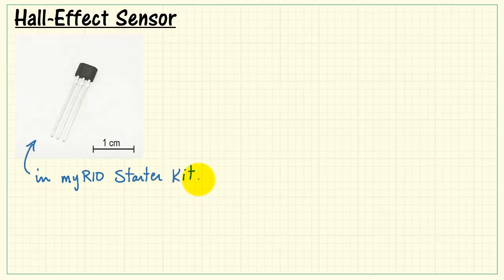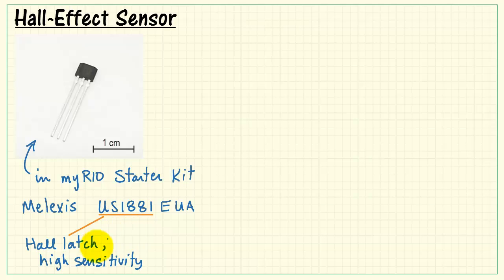Here we have the Hall Effect sensor that's included in the MyRIO Starter Kit. It's the Melexis US1881EUA. This portion of the part number stands for the Hall latch. This is a high sensitivity version.